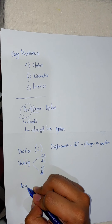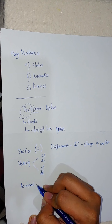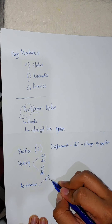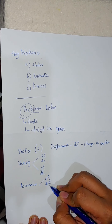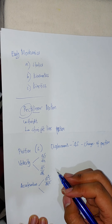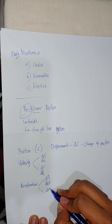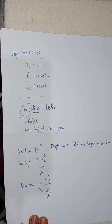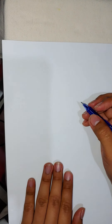Acceleration is the second derivative of position with respect to time, or equivalently the first derivative of velocity with respect to time. In solving problems, we should first know whether the problem involves constant acceleration or non-constant acceleration.